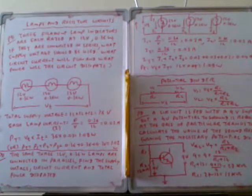Today's topic is lamps and resistance circuits. Three filament lamps are each rated at 12V, 0.36 watts. If they are connected in series, what supply voltage should be used, what circuit current will flow, and what power will the circuit dissipate?